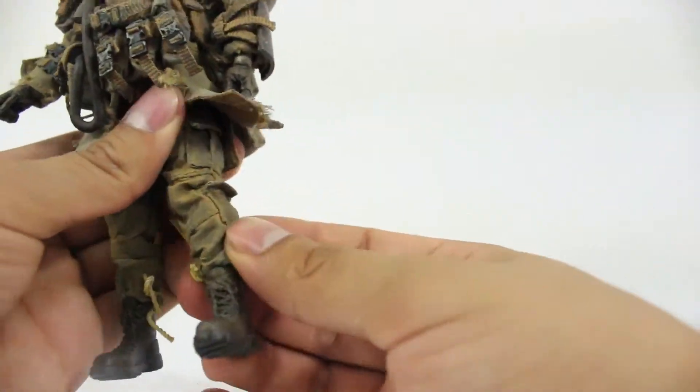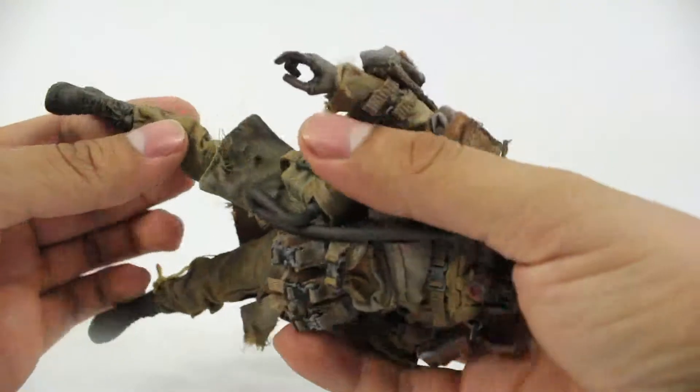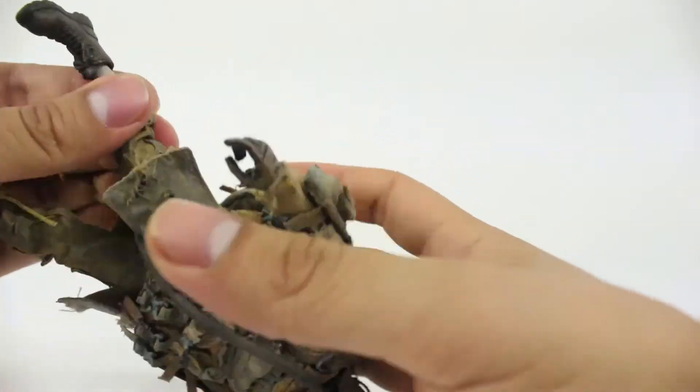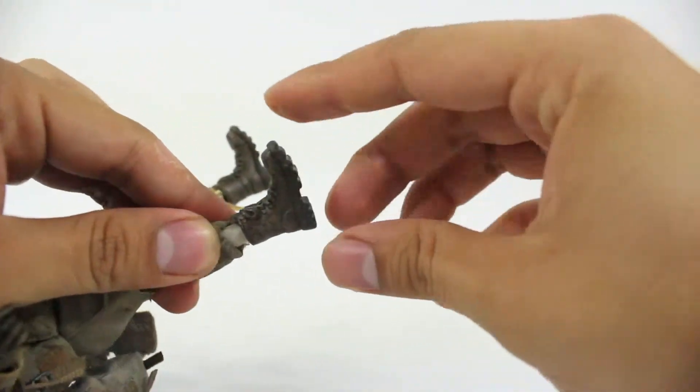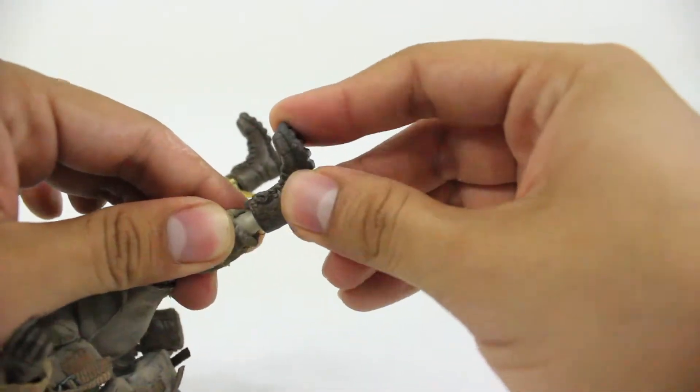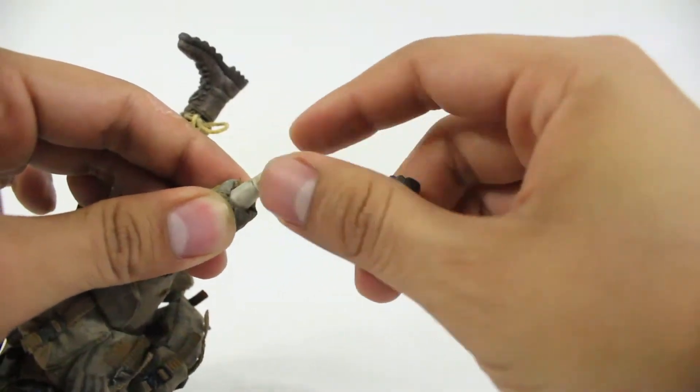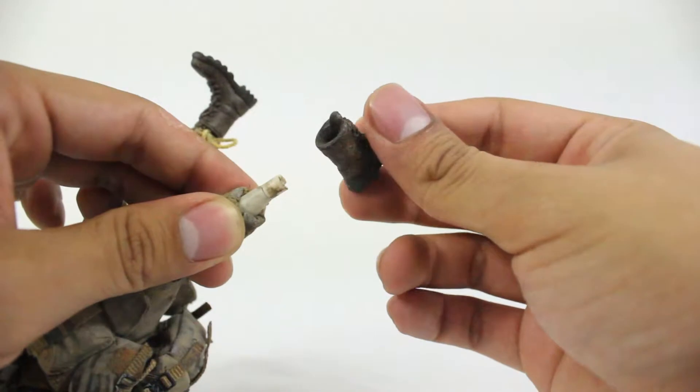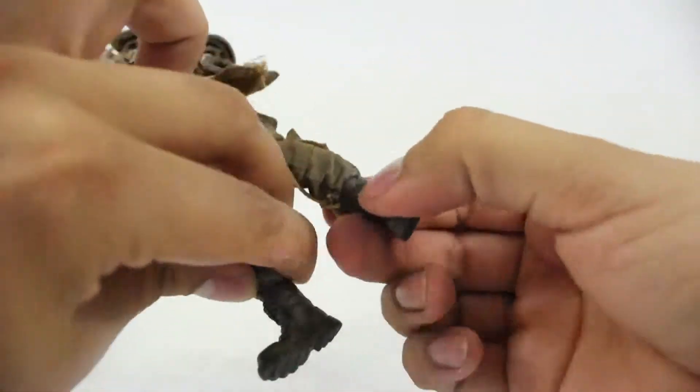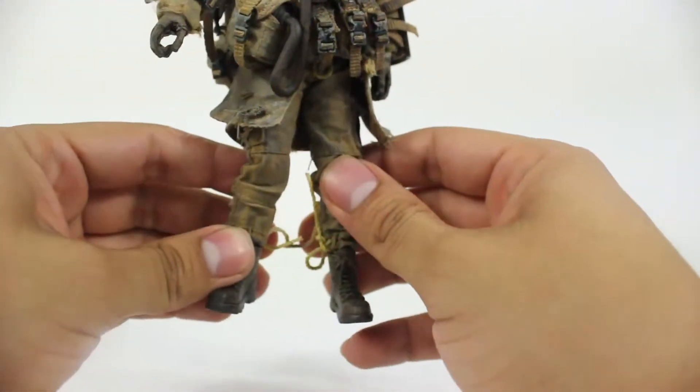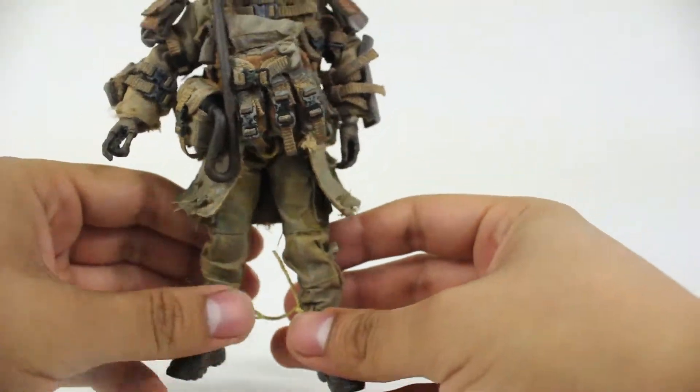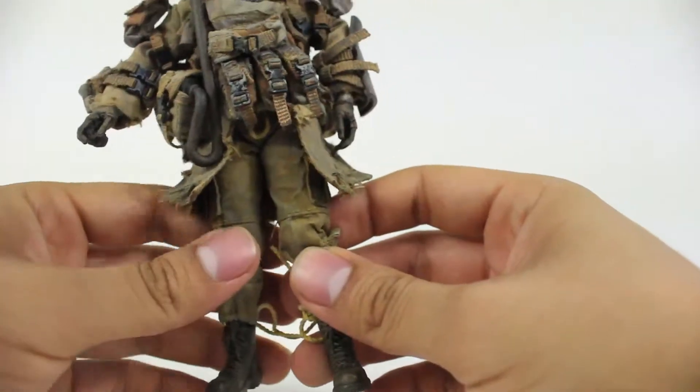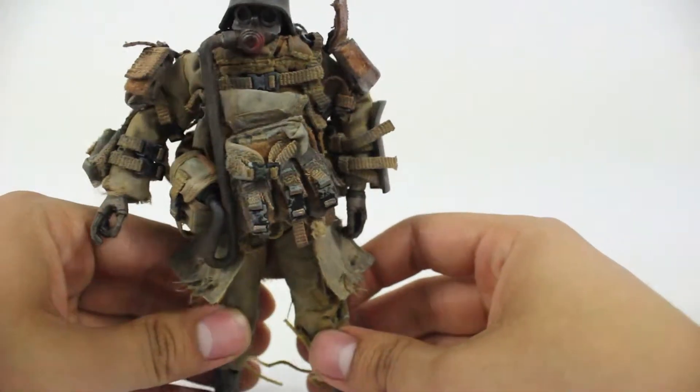The legs however, and this is really my only gripe with the way 3A does these kinds of figures, there is no articulation in the foot really. That's where they would put a peg and another smaller shoe on a double ball joint, but the shoe just pegs in and he has to stand static. So you really have to work with the shoes to get him in any cool poses.